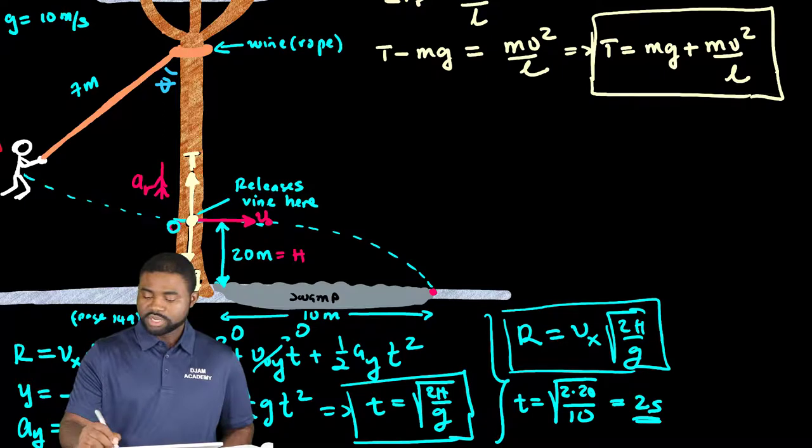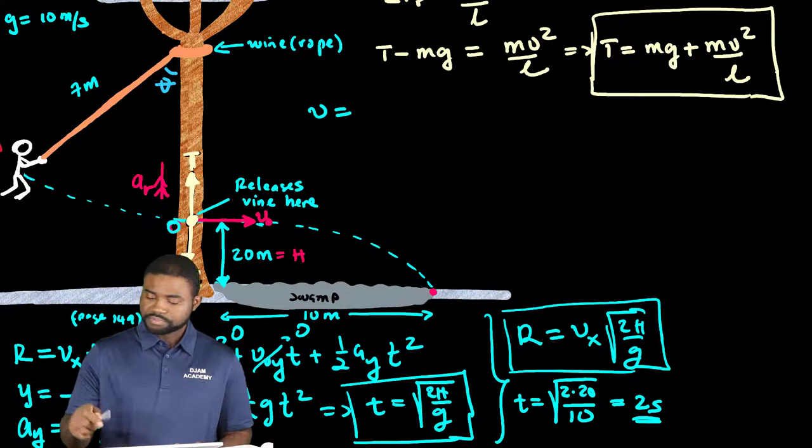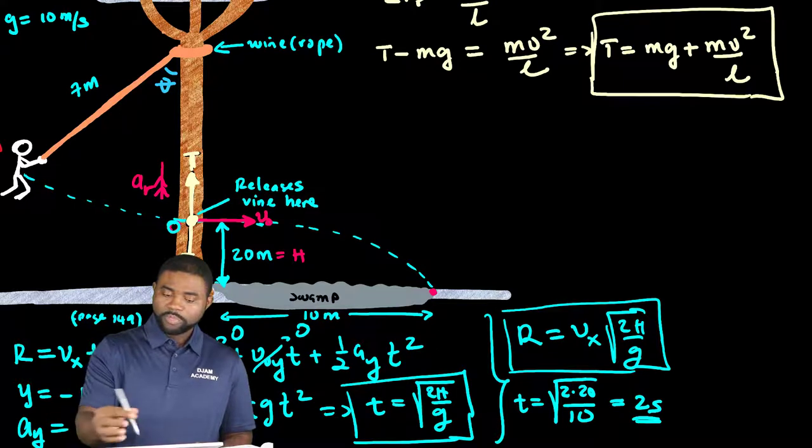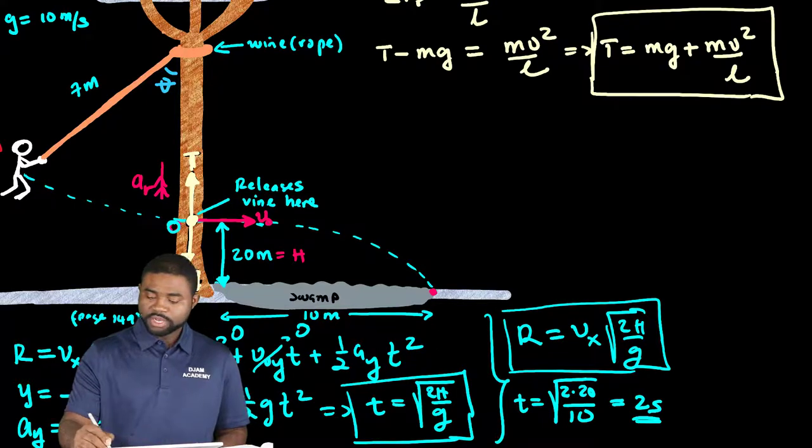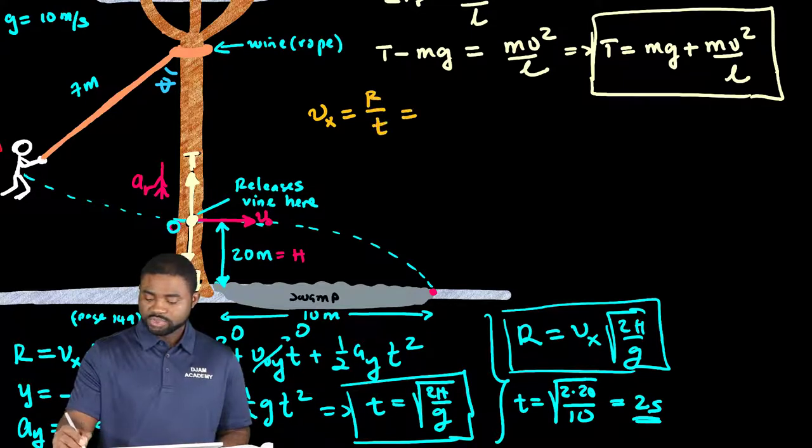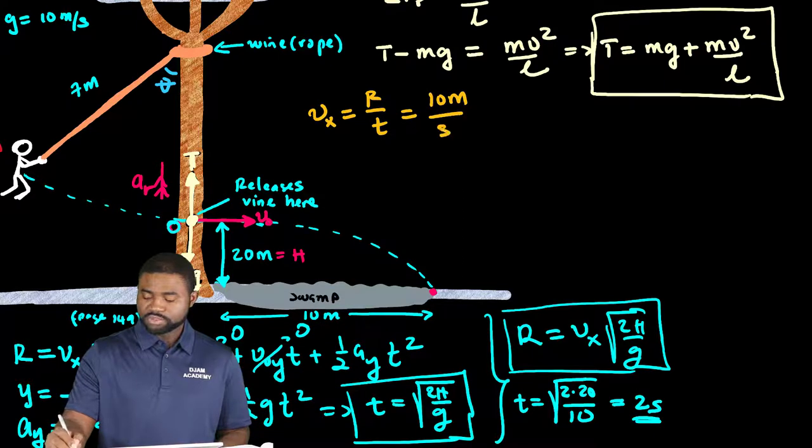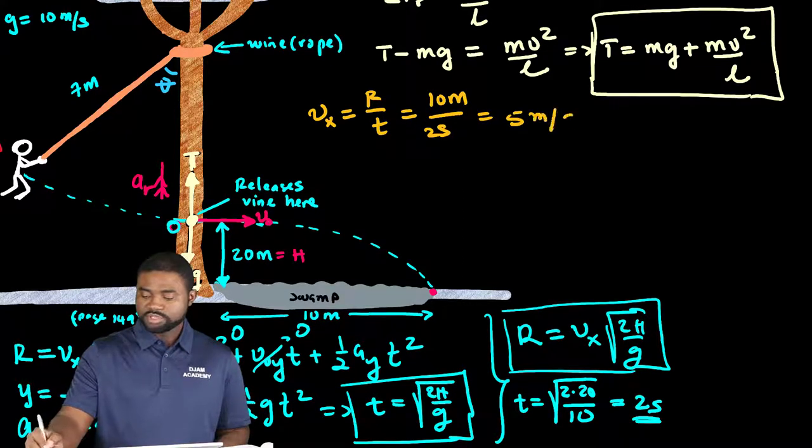And if t is equal to 2 seconds, it would imply that vx is equal to r over t, which is equal to 10 meters divided by 2 seconds, which is equal to 5 meters per second.